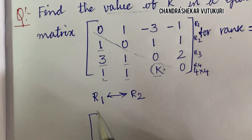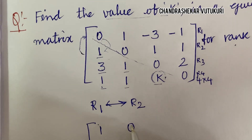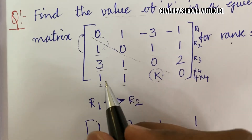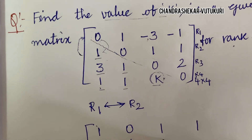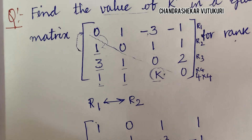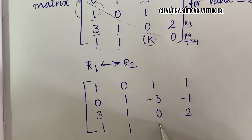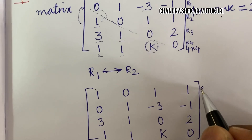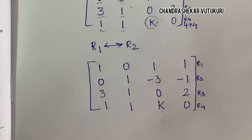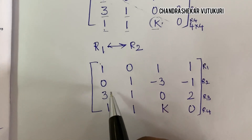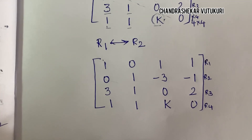After the row interchange, row 2 comes to the top and row 1 goes down. The new row 1 is: 1, 0, 1, 1. In the place of row 2, I write the old row 1: 0, 1, −3, −1. The remaining rows stay the same: row 3 is 3, 1, 0, 2 and row 4 is 1, 1, K, 0. Now the first element in row 1 is 1, so we can make all elements below the diagonal zero.